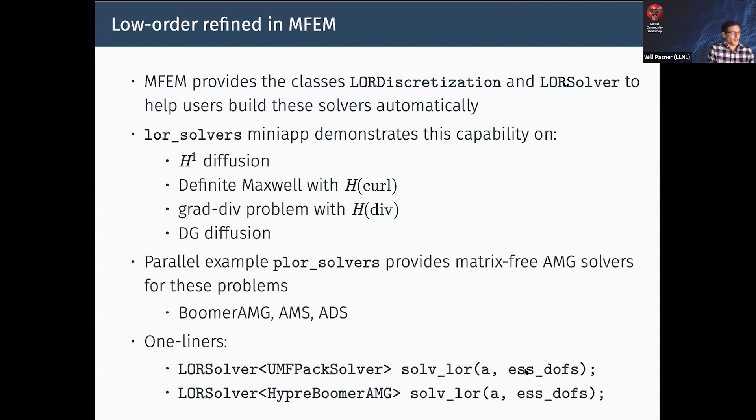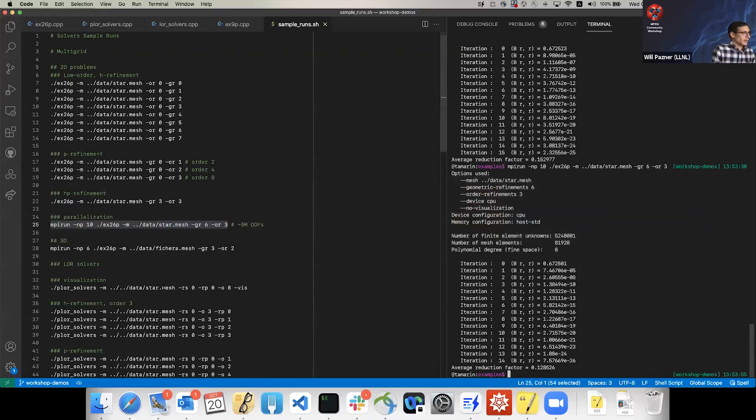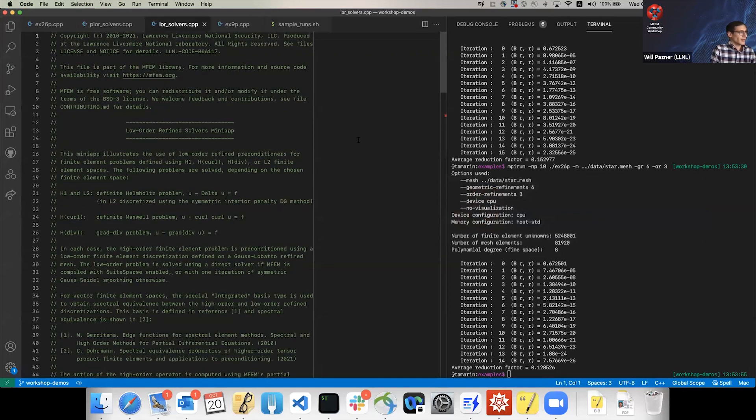If you have a high-order bilinear form with some boundary conditions, this is how you create a direct solver built using the low-order system. This is how you create a scalable solver built on BoomerAMG - just a one-liner.